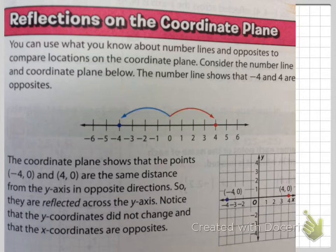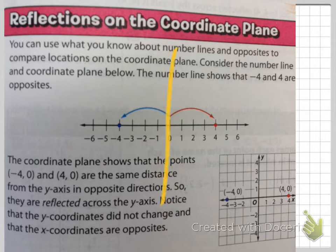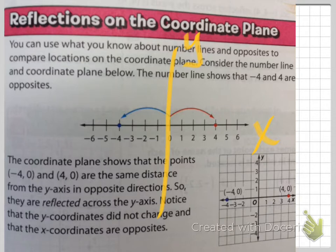If we make this into a coordinate plane, we'd have a line going through the 0, with the y-axis and the x-axis. This shows that the points negative 4, 0 and positive 4, 0 are the same distance from the y-axis.